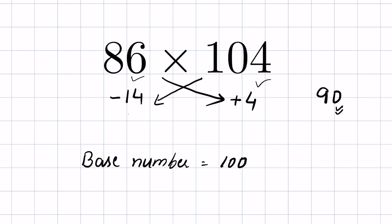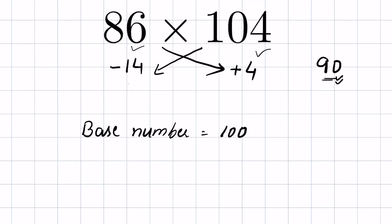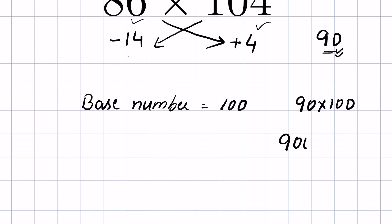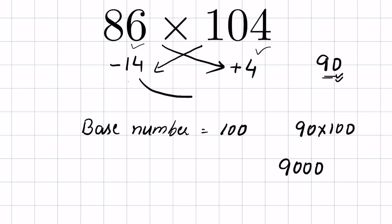Now we will multiply the base number by this 90. So 90 times 100 will be 9000. Next step is we multiply the differences, that is minus 14 times positive 4. 14 times 4 is 56, and minus here, so minus 56.